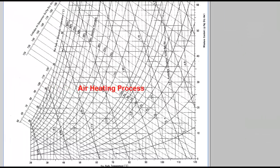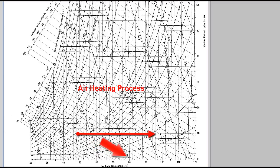First, let's look at the air heating process. This process is described as a horizontal line on the psychrometric chart. Note that during heating, the dry bulb temperature of the air increases, while the humidity ratio remains constant throughout that process.